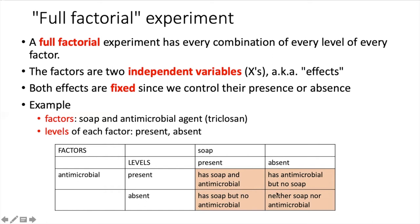We have essentially set up a grid here where we have every combination of the levels for these two factors. The two factors are considered to be independent variables — that is, they are both things that we can control. Another term for this is fixed effects.